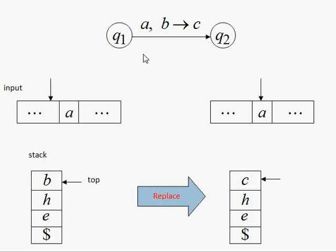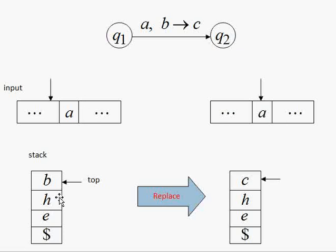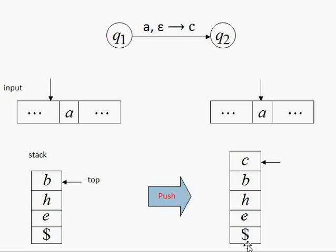If we are in q1, we get a as input, and the topmost element is b, then we will replace this b with c and come to state q2. So we had a as input and b as the topmost element in our stack, so we replaced b with symbol c.